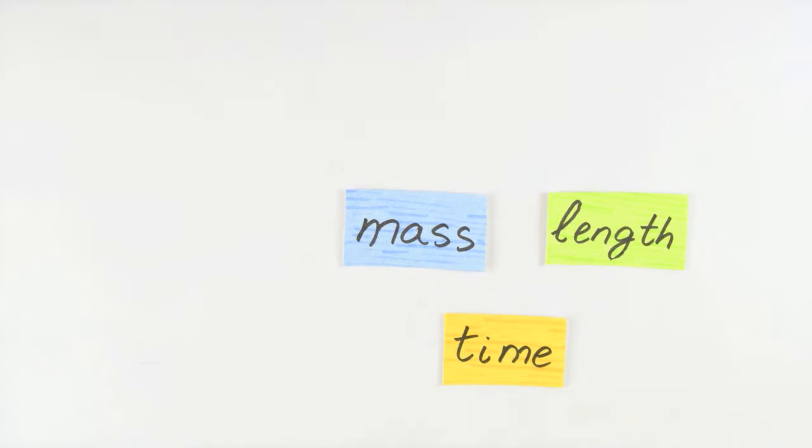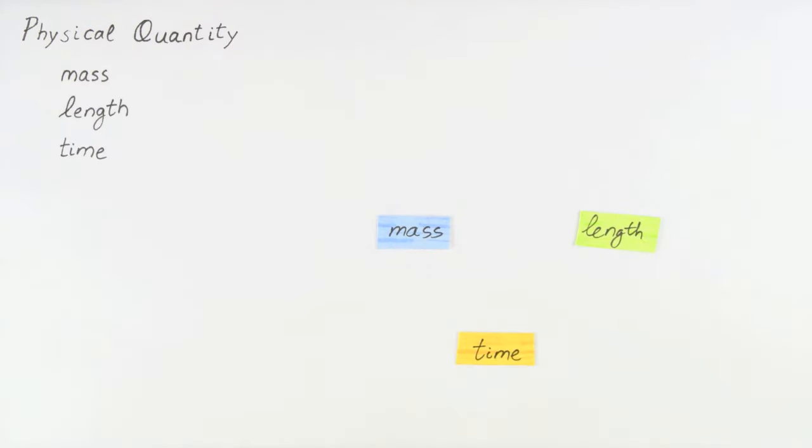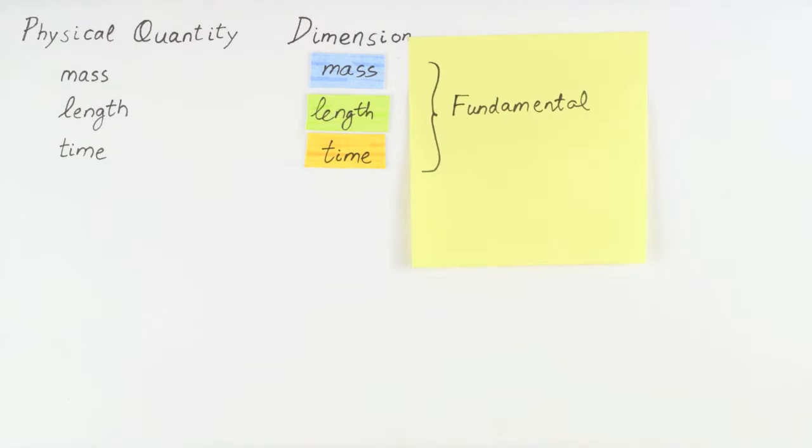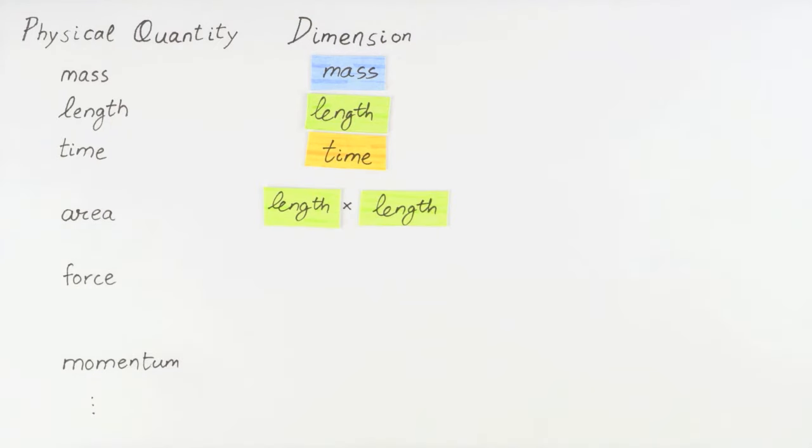In this process, basic quantities like mass, length, and time are considered fundamental dimensions, meaning they can't be described in terms of any other physical quantity. And the dimensions of other physical quantities can then be expressed as products and or ratios of the fundamental dimensions.